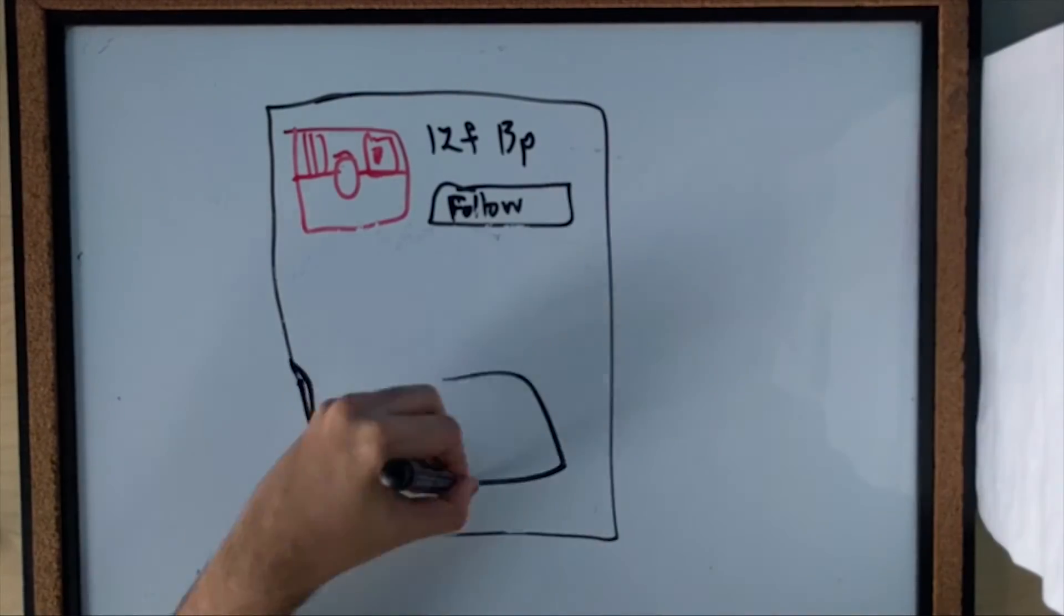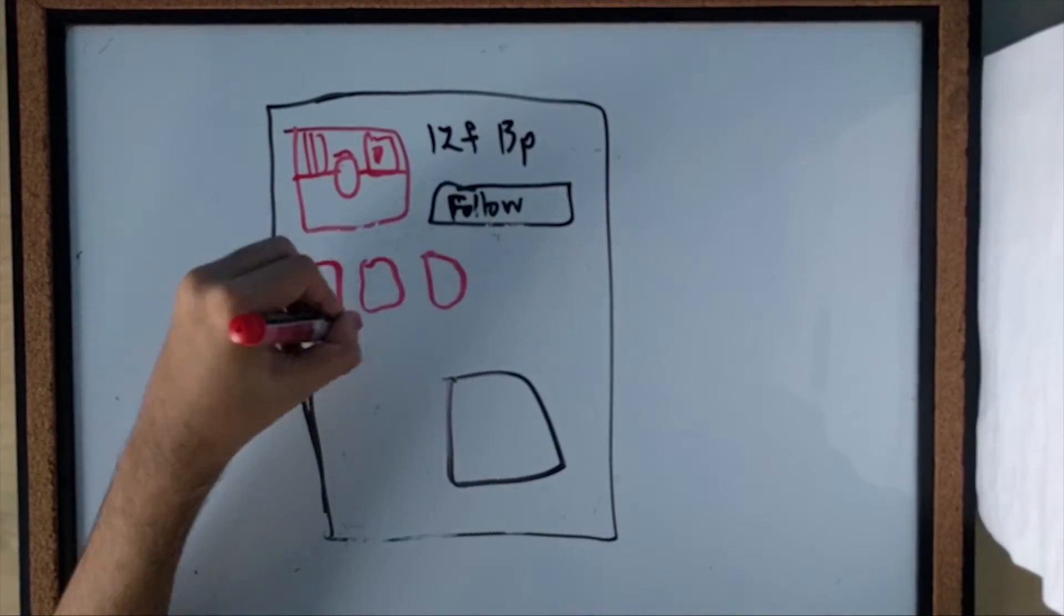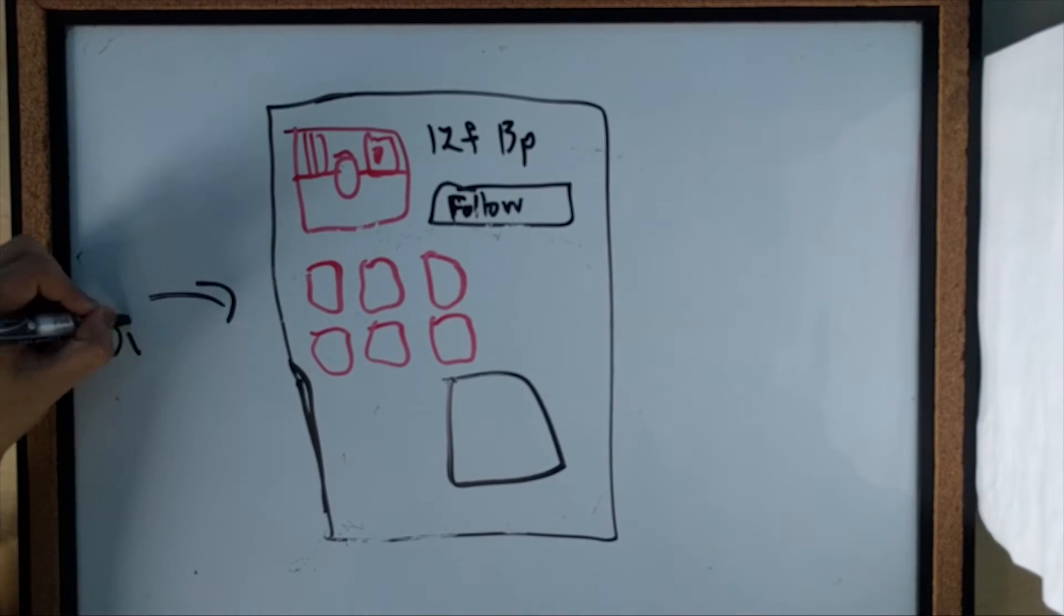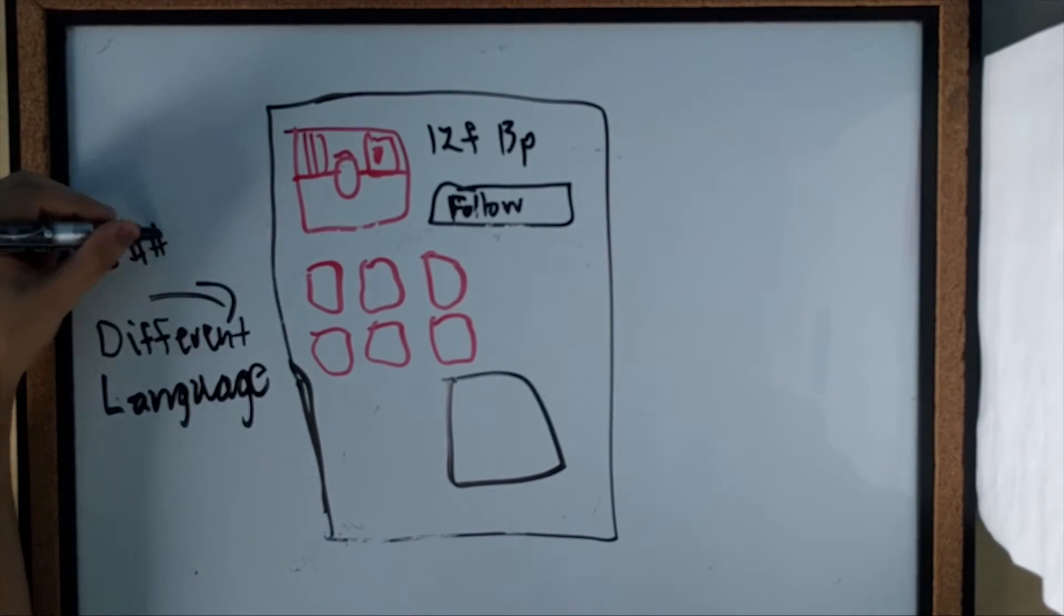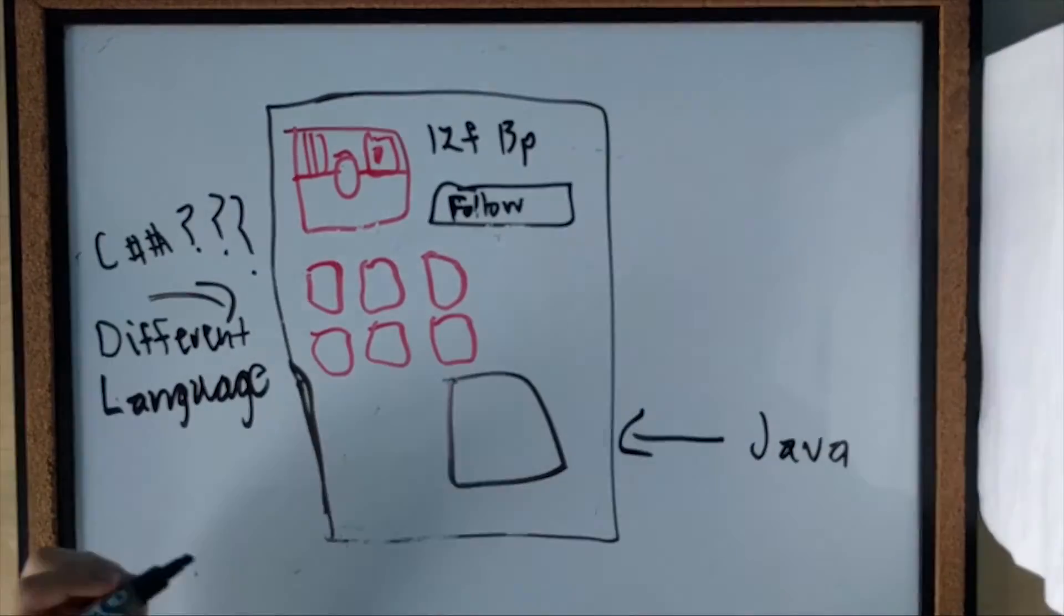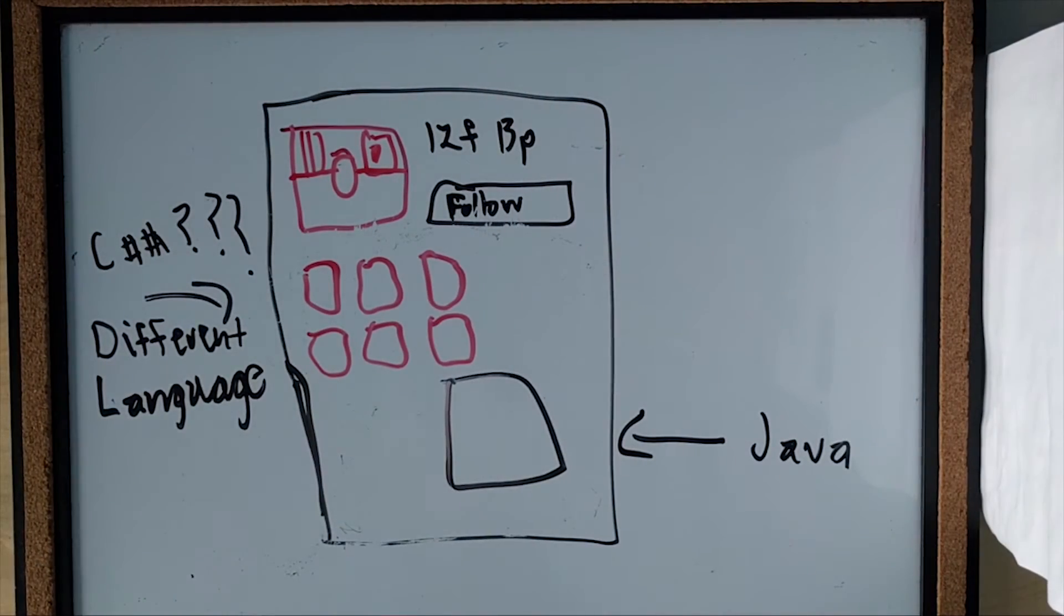Typically, client-side events and server-side events operate on different languages. The client-side language has the main purpose of displaying visuals and cool buttons and text. These languages include, but are not limited to, JavaScript, C Sharp, HTML.